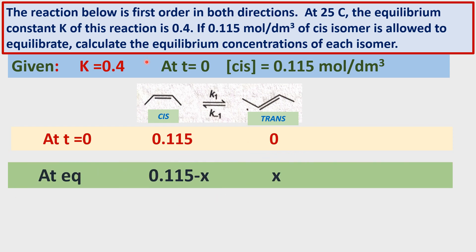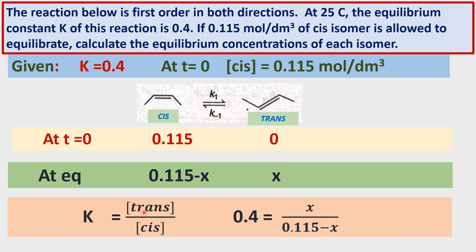Let us allow the system to equilibrate. At equilibrium, the concentration of the CIS isomer is 0.115 minus X, and the concentration of the trans isomer is X. Here, X moles have reacted to form the trans isomer — not all of them, only X moles converted to trans. So, what is the equilibrium constant expression?